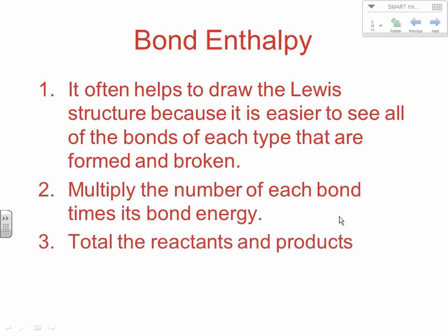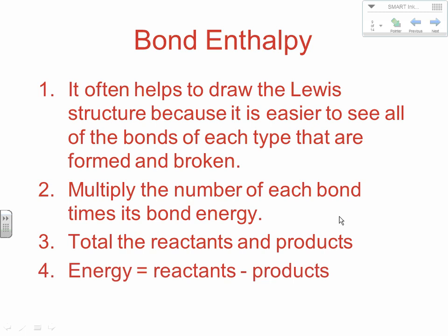Here's some help on what you're really going to do for bond enthalpy calculations. First, draw your Lewis structures, because it makes it much easier to see what bonds are being formed and broken — sometimes it's hidden until you see the Lewis structure. To simplify, multiply the number of each type of bond by its bond energy. We're not going to worry about what actually was broken versus made. Just 'break them all, make them all' — count the total number of bonds on each side, multiply by the bond energy, then do reactants minus products.